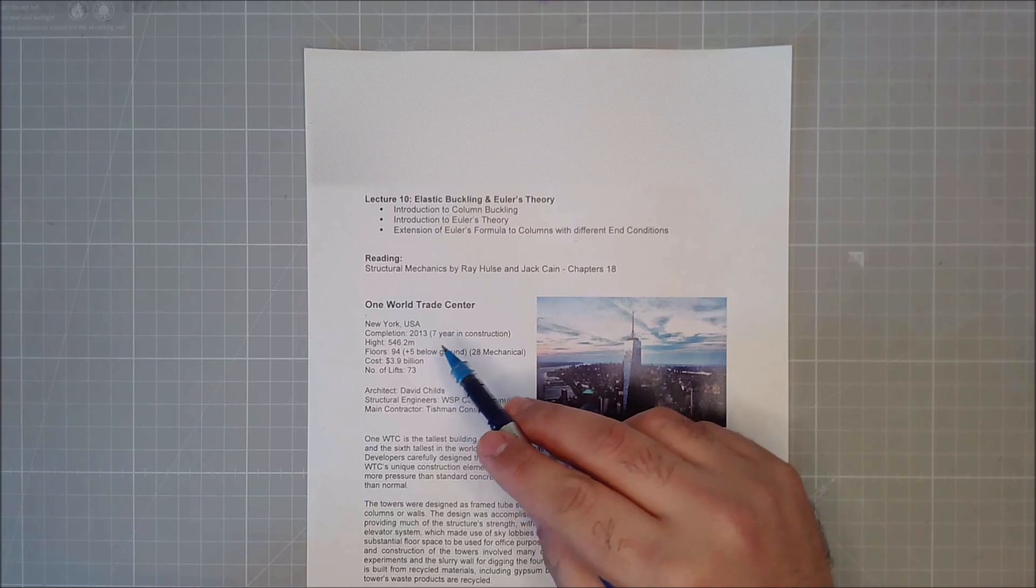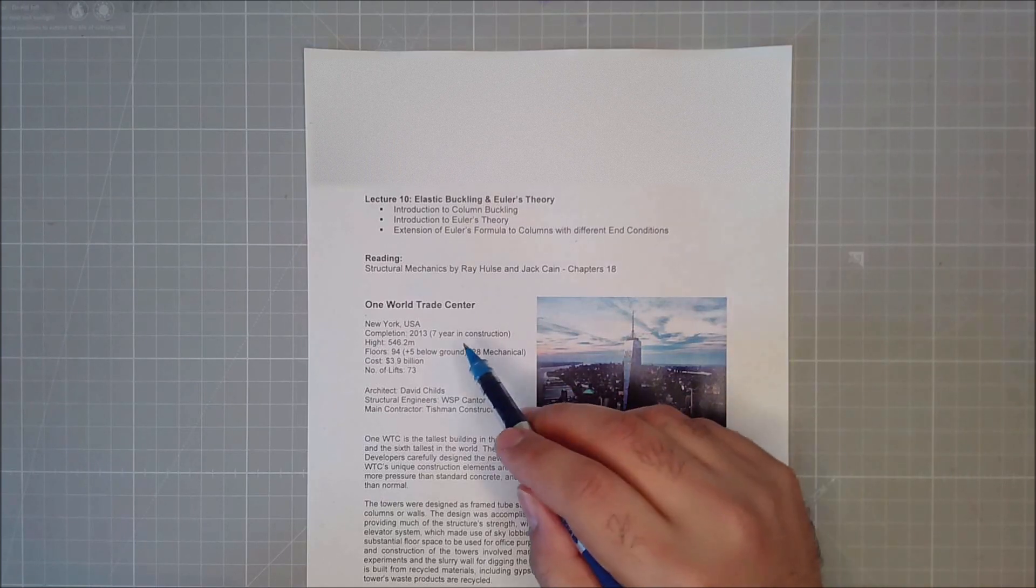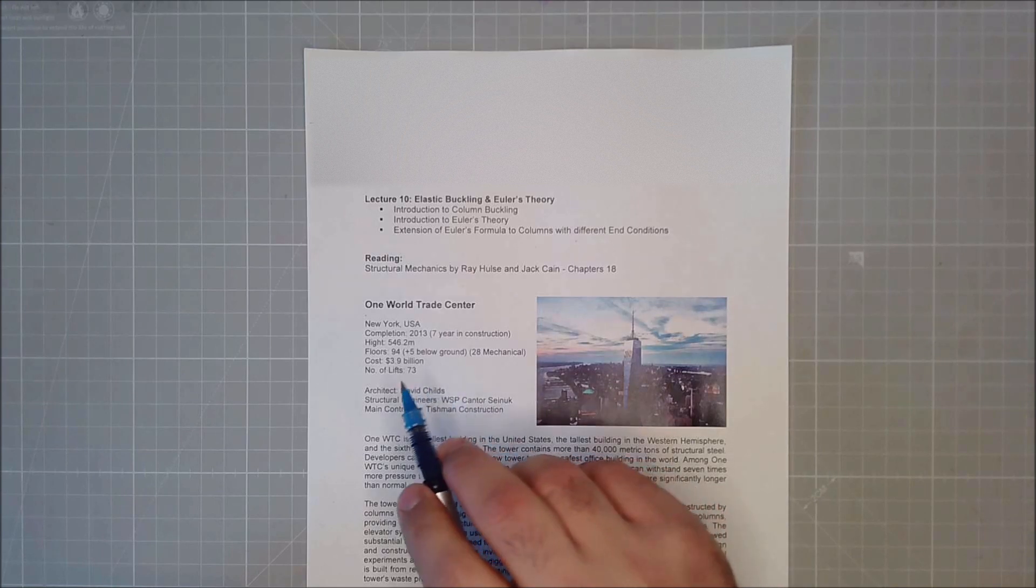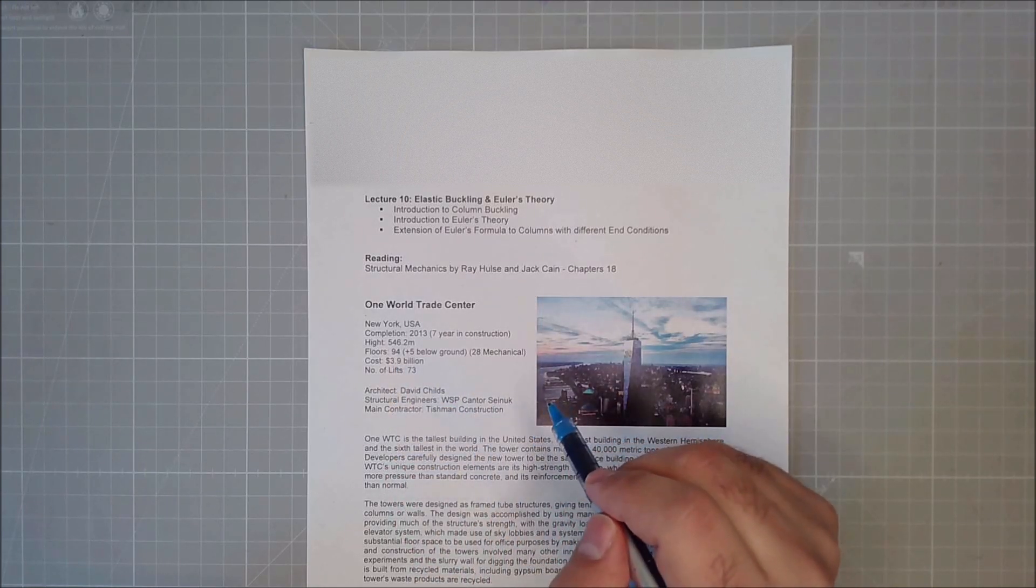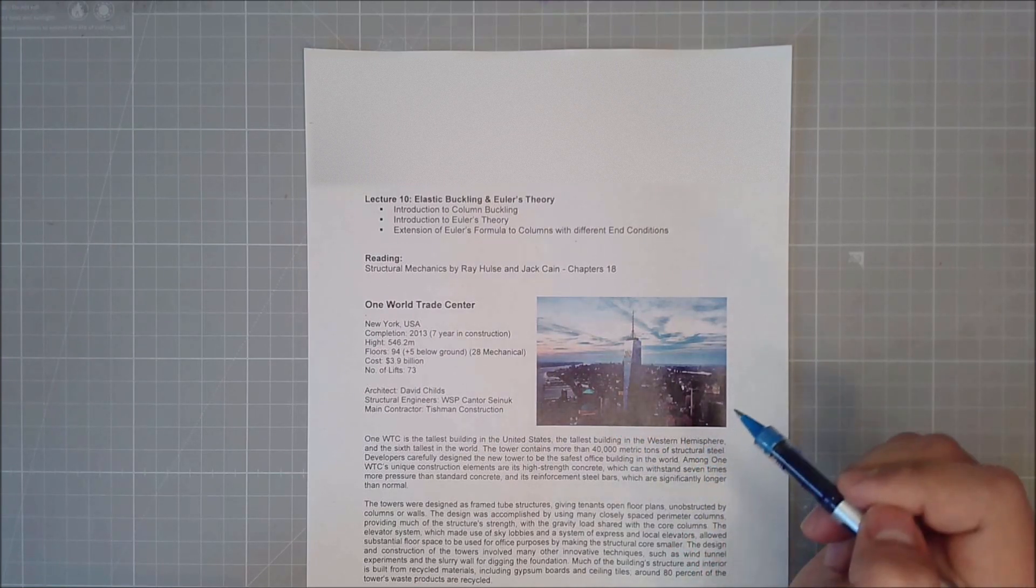Today's case study is One World Trade Center in New York, USA. It opened in 2013, and it took them about seven years to construct it, with a price of 3.9 billion dollars. It's about 546 meters high, and it has 94 floors, making it the tallest tower in the United States, as well as one of the tallest towers in the world.